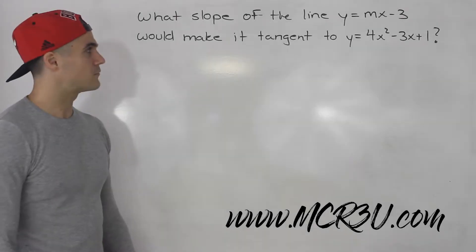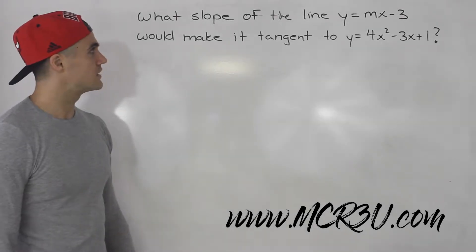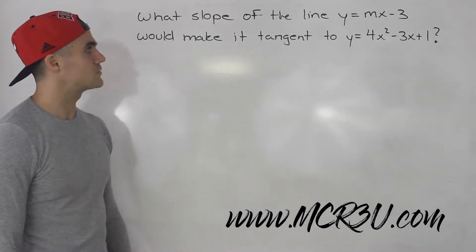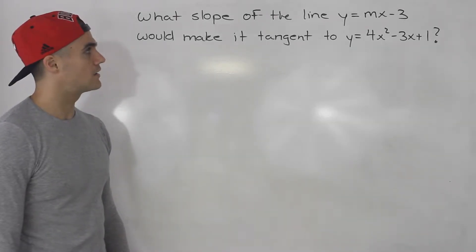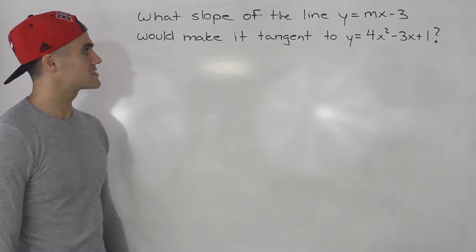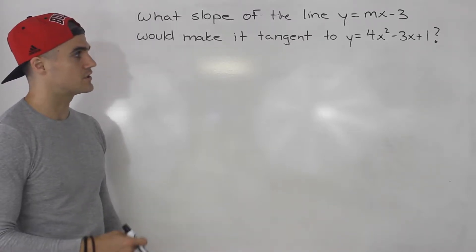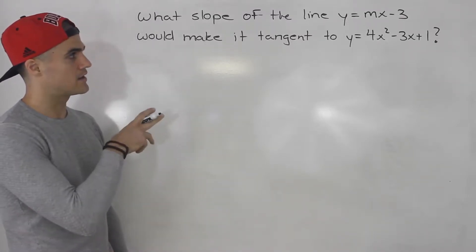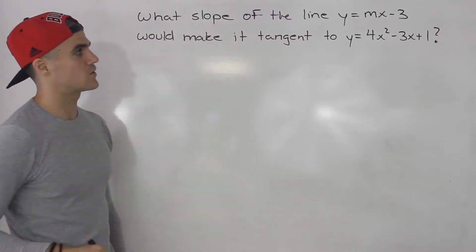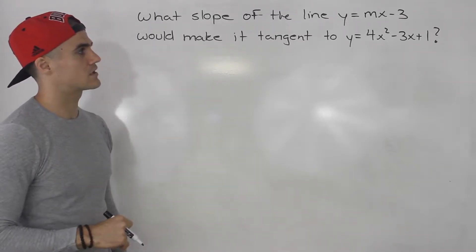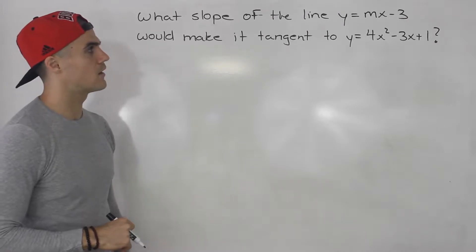What's up everybody, welcome back. Moving on to the next question: what slope of the line y equals mx minus 3 would make a tangent to y equals 4x squared minus 3x plus 1?